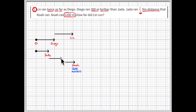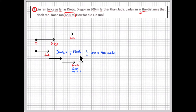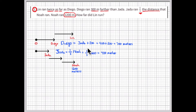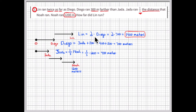Three times Jada's distance places Noah out here at 1,200 meters. So working backwards: Jada ran one-third the distance that Noah ran, so one-third of 1,200, or 1,200 divided by 3, equals 400 meters. Diego ran 300 meters farther than Jada — 400 plus 300 equals 700 meters for Diego. And Lynn ran twice as far as Diego — 2 times 700 equals 1,400 meters.